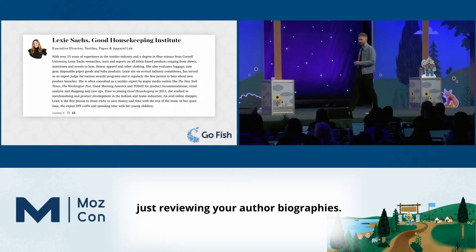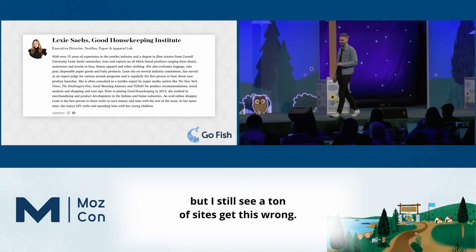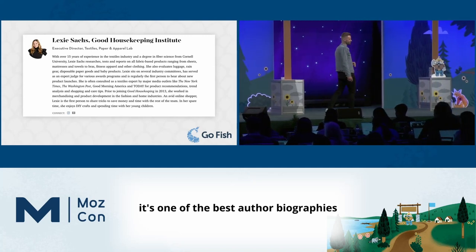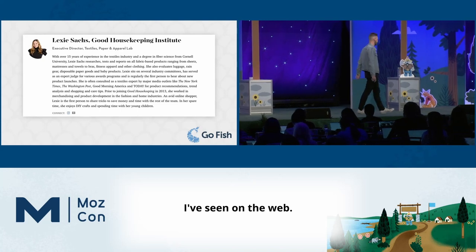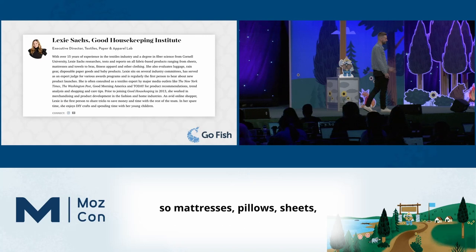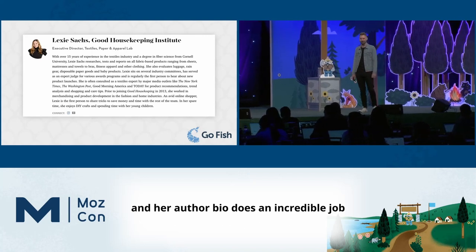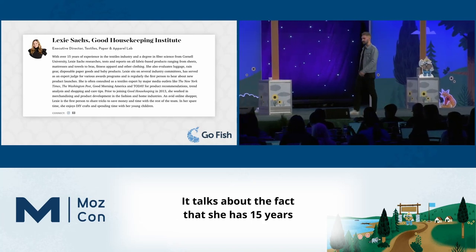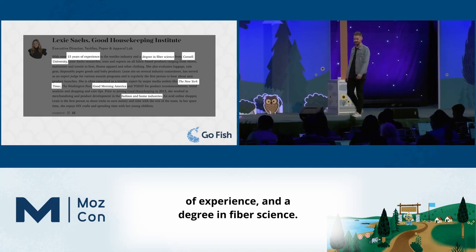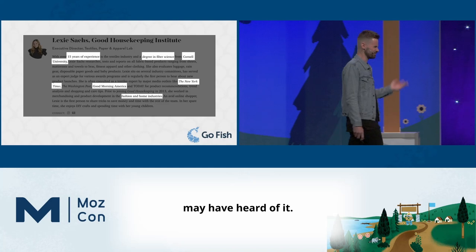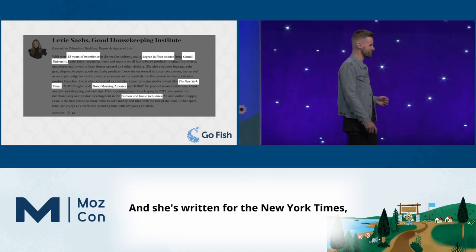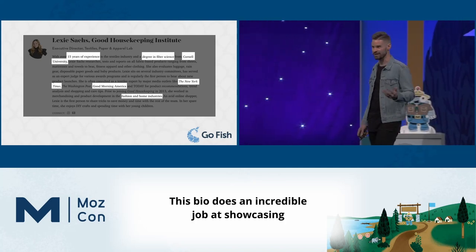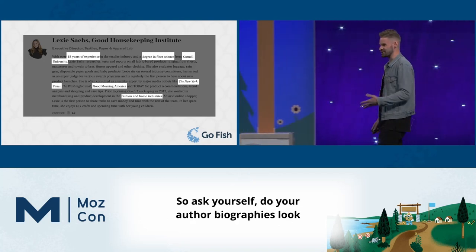For starters, review your author biographies. I still see a ton of sites get this wrong. Here's a gold standard — take a picture. It's one of the best author biographies I've seen on the web. It's written by Lexi Sack, who writes for Good Housekeeping covering textiles content — mattresses, pillows, sheets. Her author bio does an incredible job showcasing why she's an expert, talking about 15 years of experience and a degree in fiber science from Cornell.